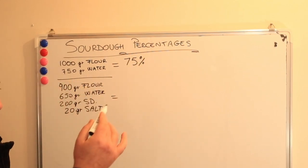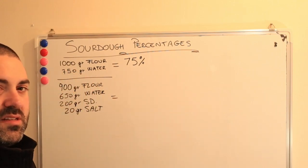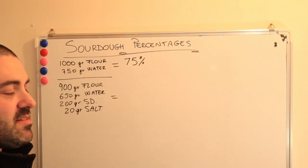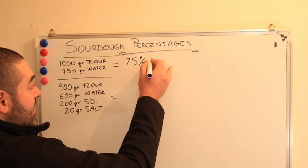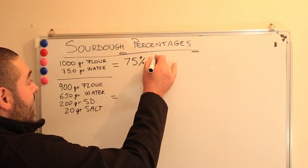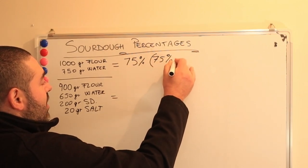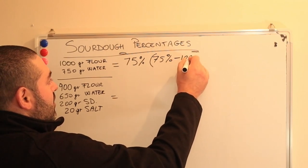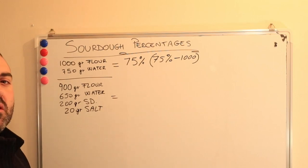So that means that I will need to calculate my percentages to the flour. You always calculate the wet ingredients percentages to the flour. Keep that in mind. So in this case I want to find out what's the 75% of a thousand grams, which equals 750 grams of water.